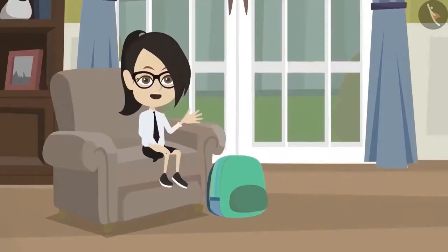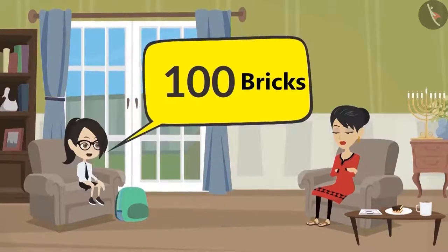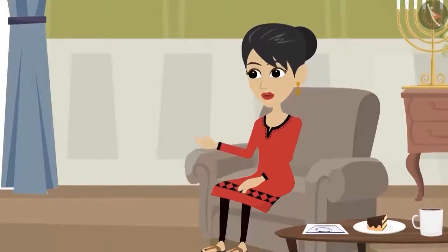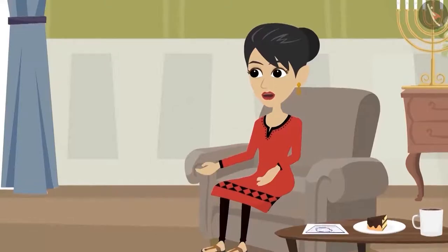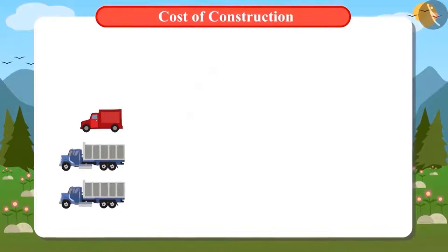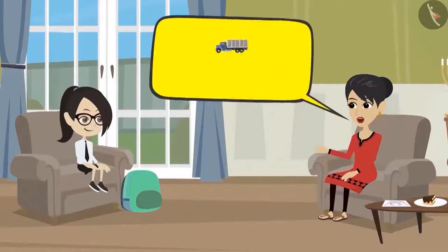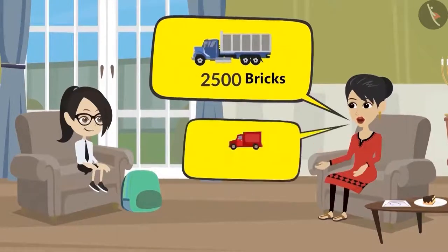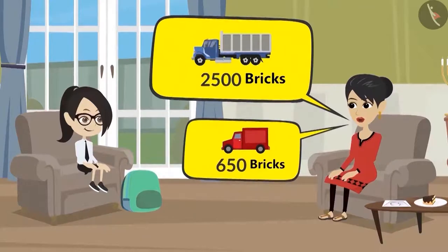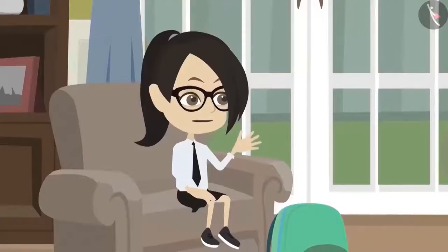Vandana wonders how to buy the remaining 100 bricks since a whole truck won't be called for just 100. She asks her mom, who explains they won't only buy bricks in big trucks. Every month they will purchase 2 big trucks and 1 small truck of bricks, buying all the bricks over 4 months. A big truck holds 2,500 bricks and a small truck holds 650 bricks.